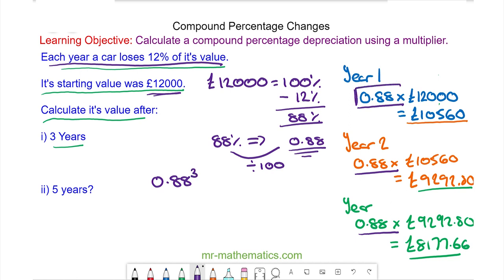You can see we have 1, 2, 3 of the original £12,000 and this is a much more efficient way of calculating a compound percentage change and we do get the same value of £8,177.66.